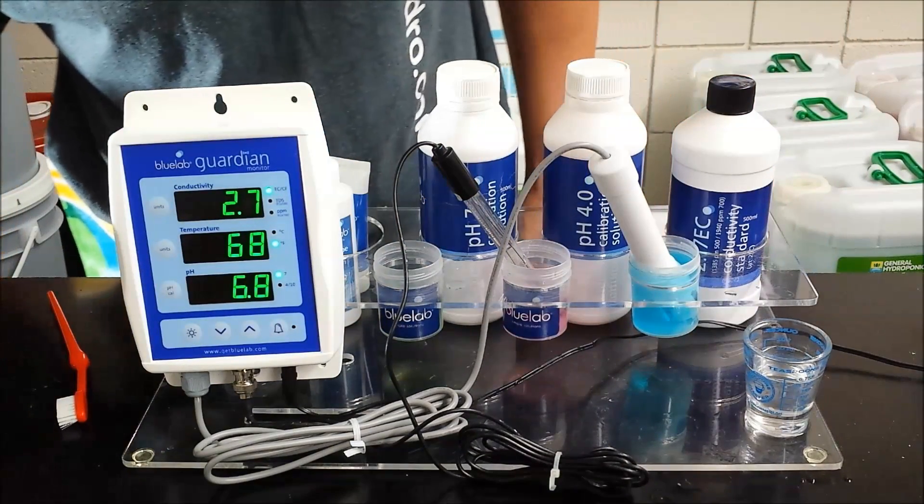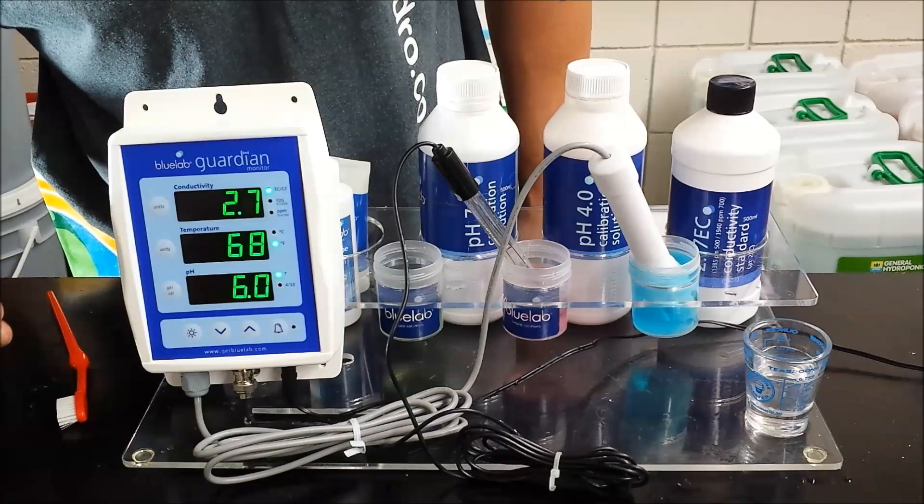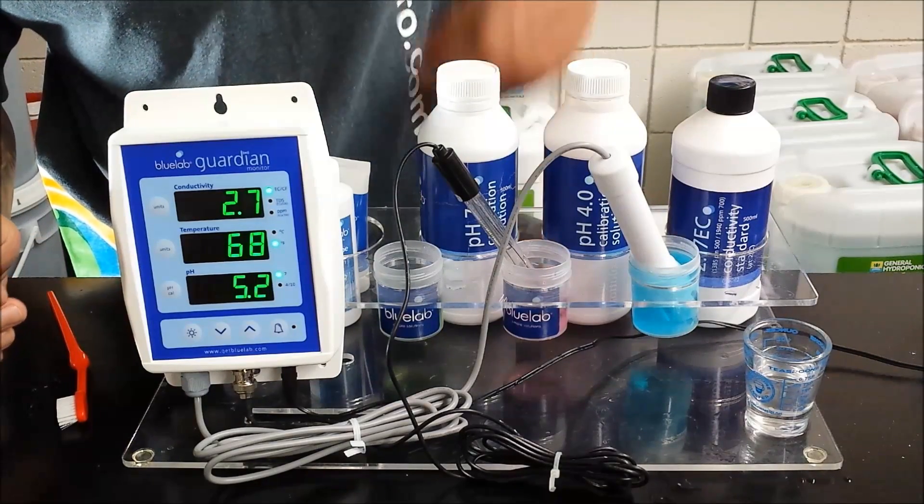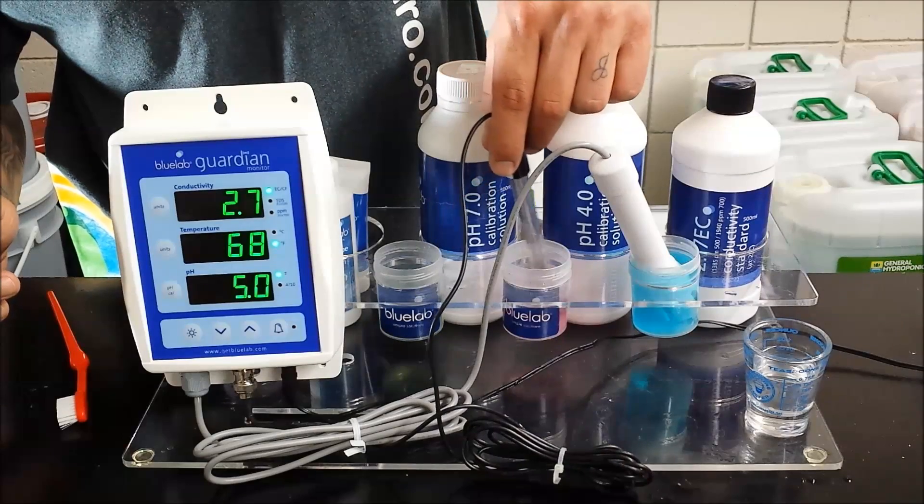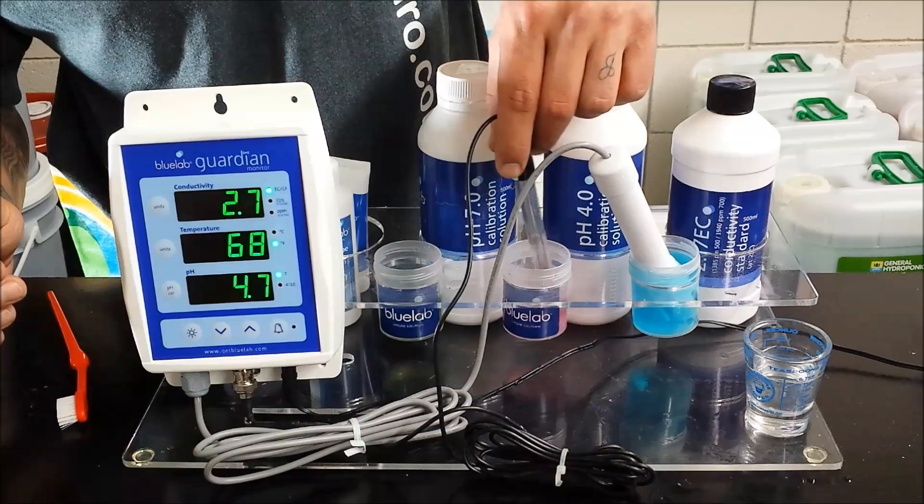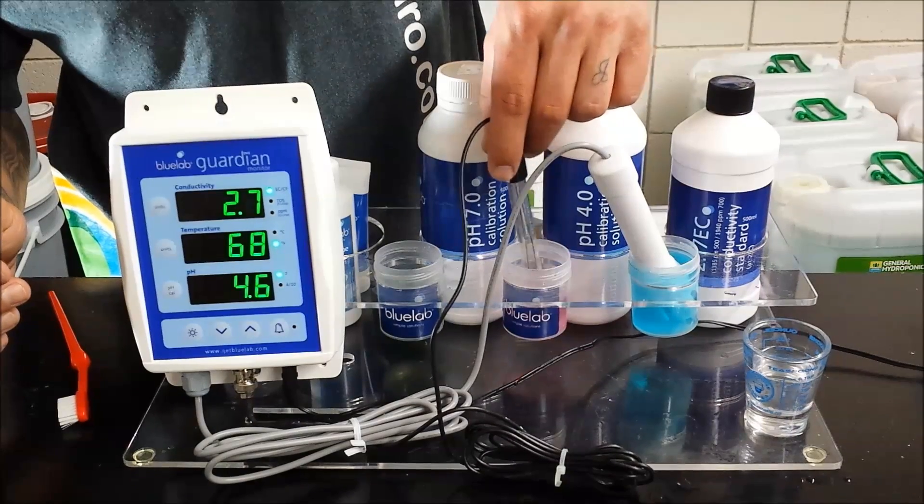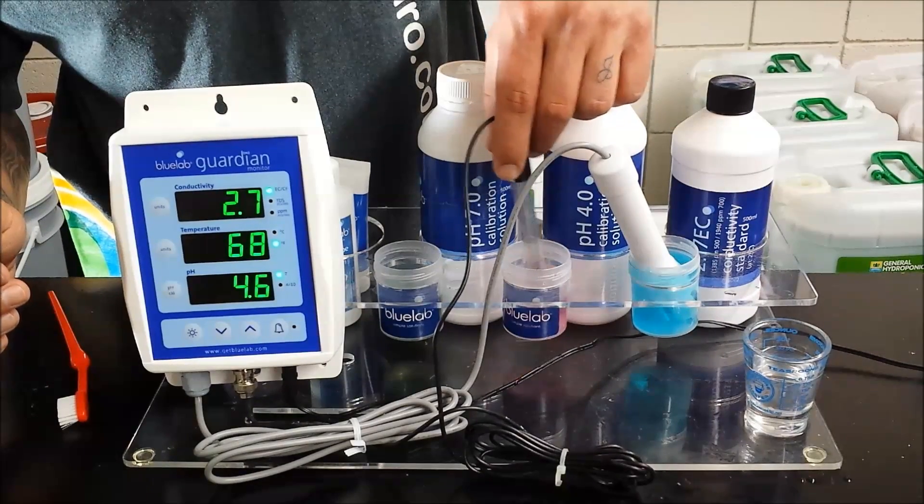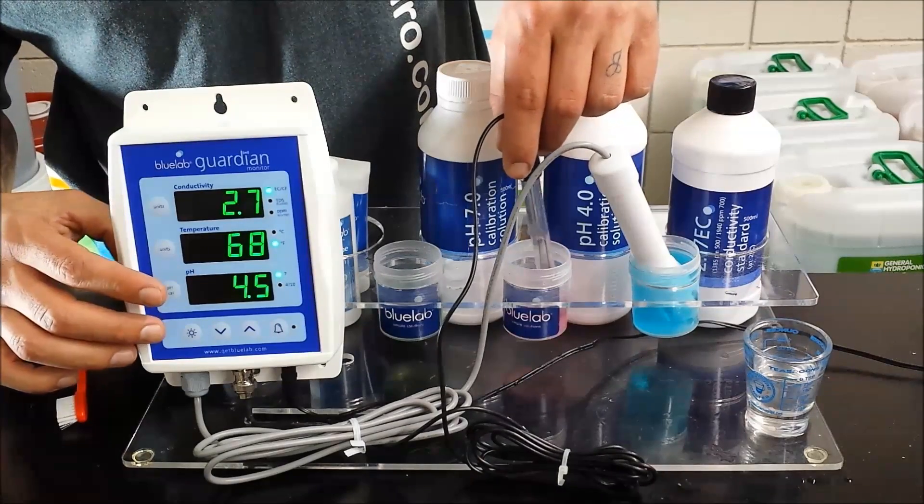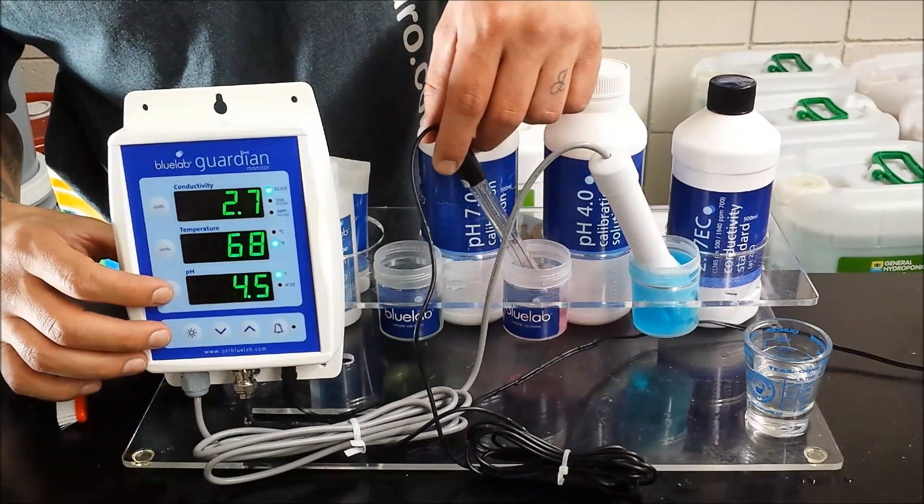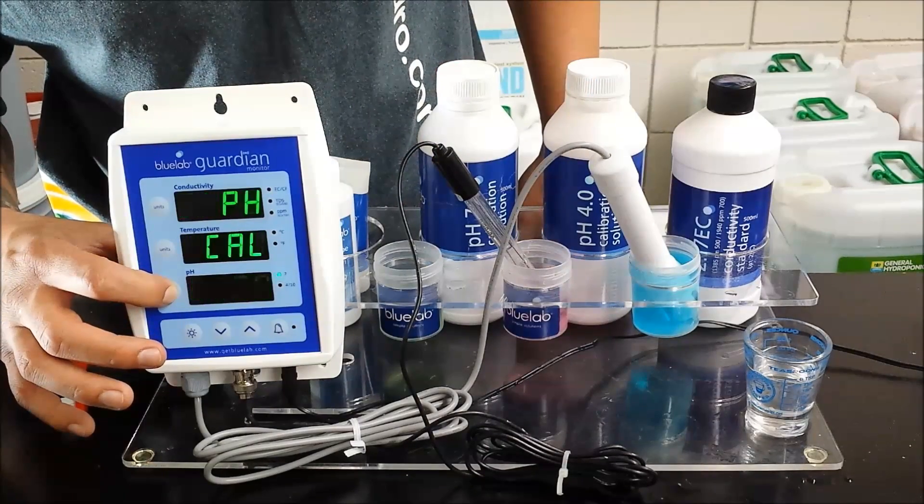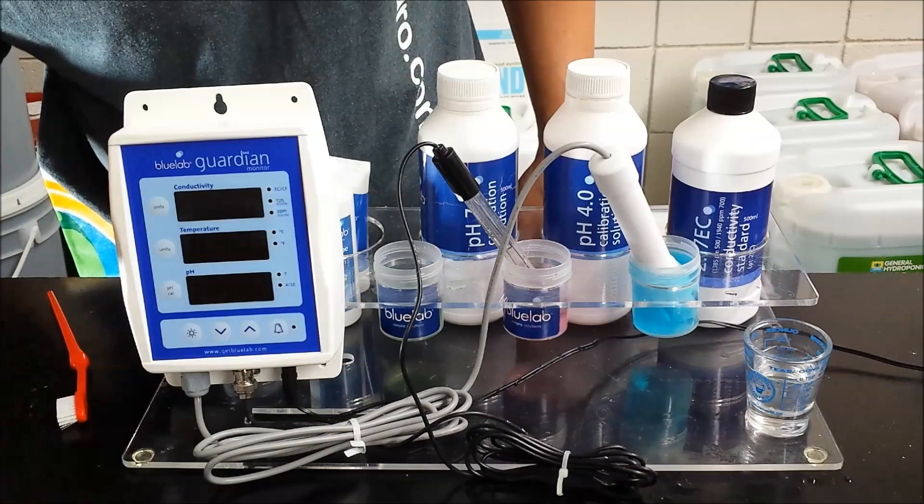Go ahead and put it in the 4.0. Again let it settle on a reading. And then you're going to go ahead and hold the pH Cal button down again, and it's going to lock on to 4 for you.